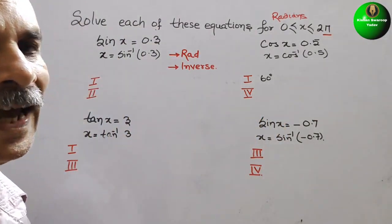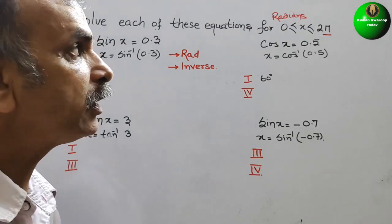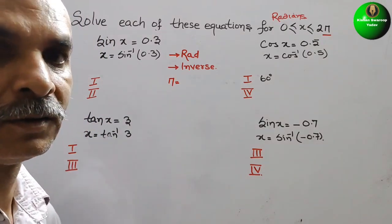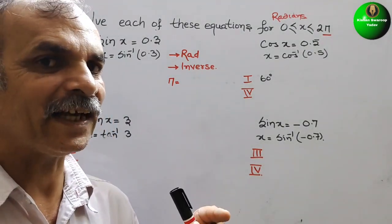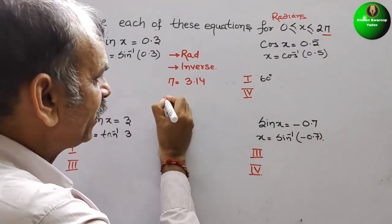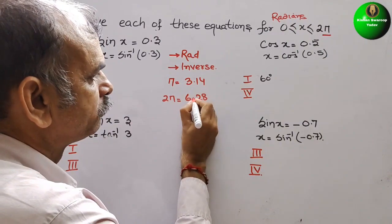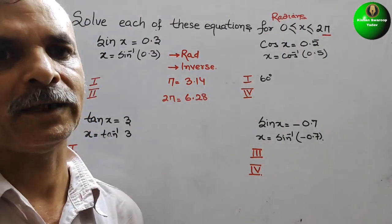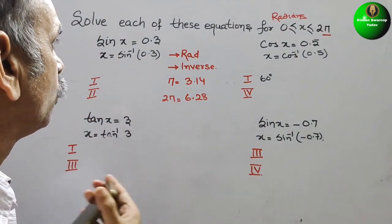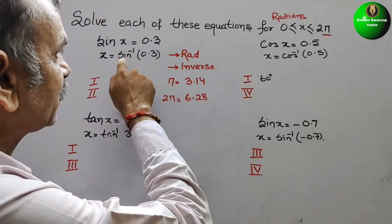Now we open the calculator. We should also know the value of π: π = 22/7 or 3.14, and 2π = 6.28. On the calculator, select rad, then inverse, and press sine inverse.